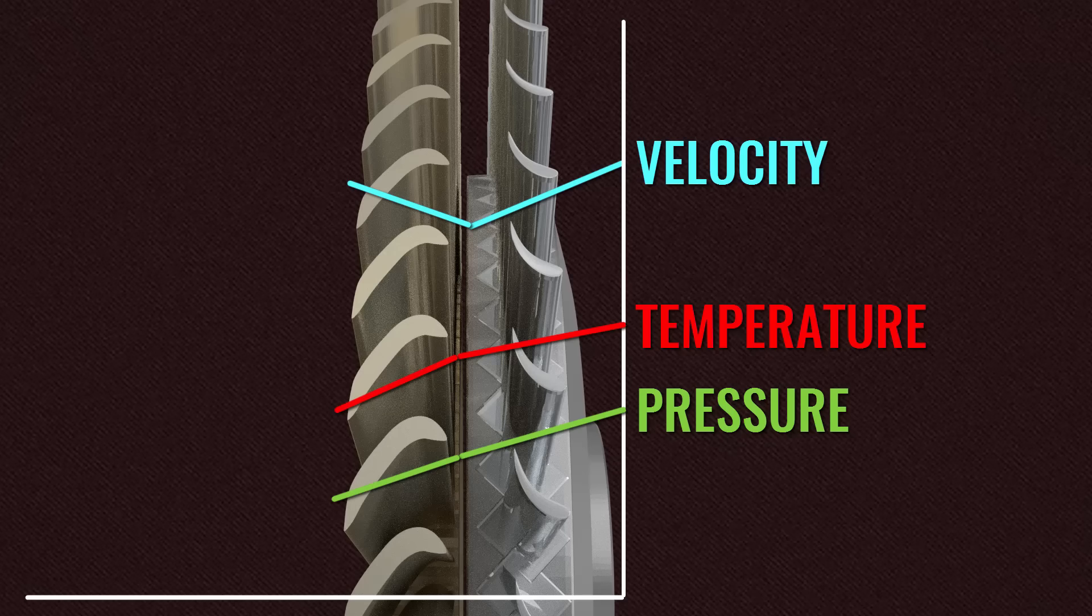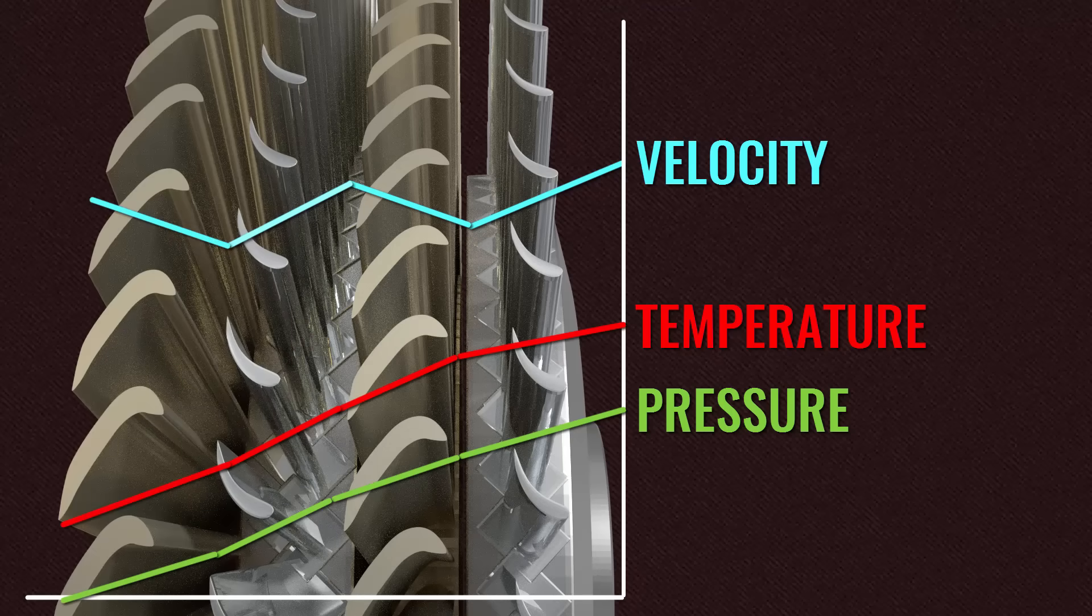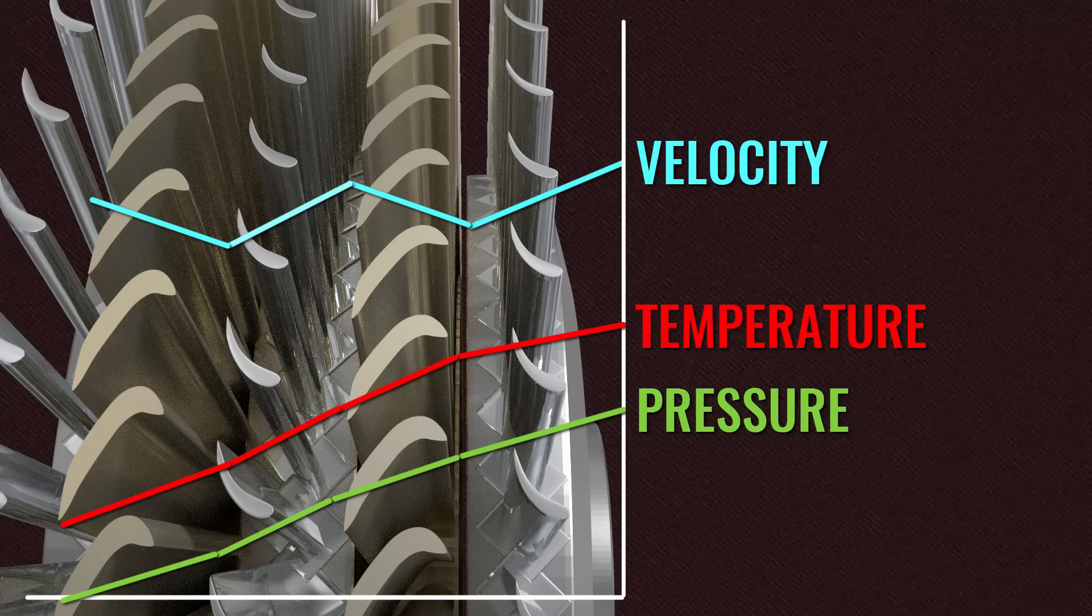Now, the next row of rotors is added. The stator also makes sure that the flow coming out of it will be at an optimum angle of attack to the next rotor set. After that, another nozzle set is added. Many such sets are used in a steam turbine.